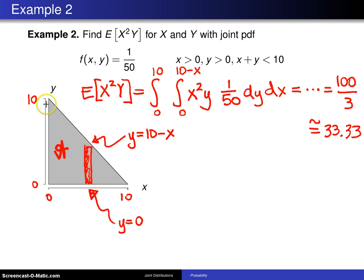if you pick a point uniformly—and that's because this probability density function does not involve x and y—if you pick a point uniformly in this triangle and you want to know what x squared times y will be on average, it turns out that will average 33.33. Now, if you had some doubts about this 33.33,